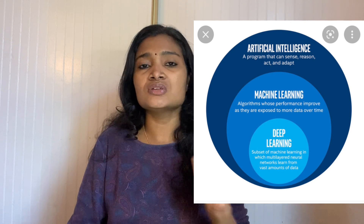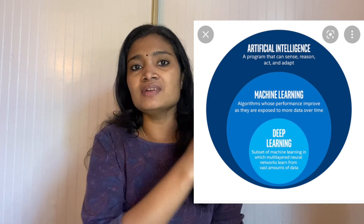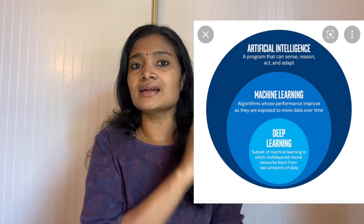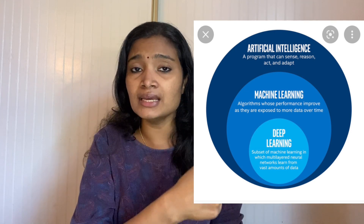So that is the relation between artificial intelligence and machine learning. Machine learning is actually a subset of artificial intelligence. You can see the image on screen: artificial intelligence is the overarching technique, and with the help of machine learning we are actually building that intelligence in the machines.